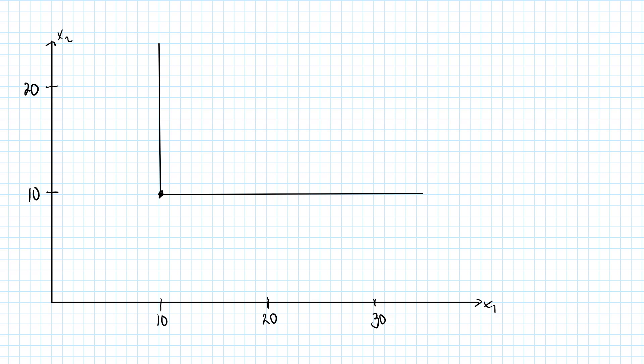This function will return the same number — it doesn't matter which number, but the same number — for all the bundles along this indifference curve. We will actually create a utility function that will return the number 10 for all the bundles on this indifference curve.